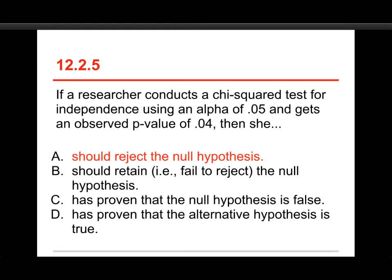B would be if we had a non-significant finding. That's what we had previously. Now, let me just say a quick thing about C and D, where we've proven that the null is false or we've proven the alternate is true. Please do not use these terms. In statistics, things are a little squishy.